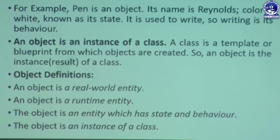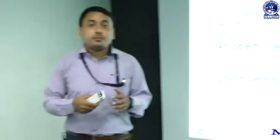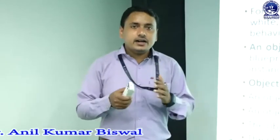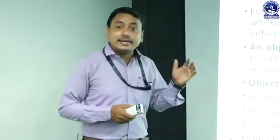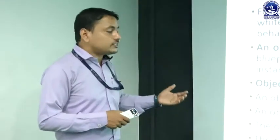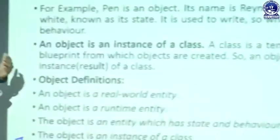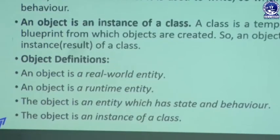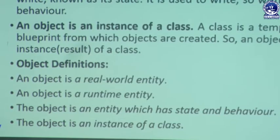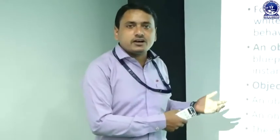A class is a template or blueprint from which objects are created. An object is the instance of a specific type of class. To summarize the general points: an object is a real-world entity, a runtime entity, and an entity which has state as well as behavior. An object is an instance of a class — with an object we can use some properties of a class.